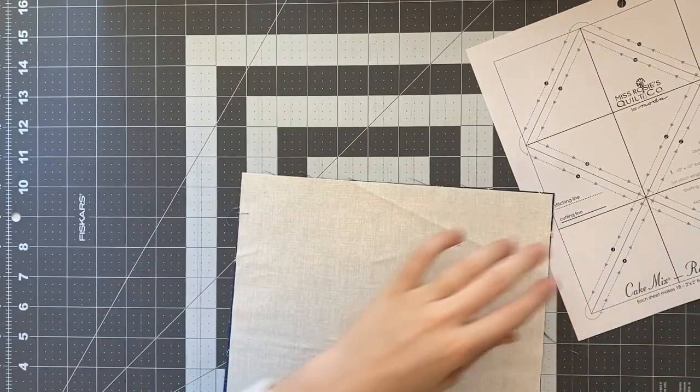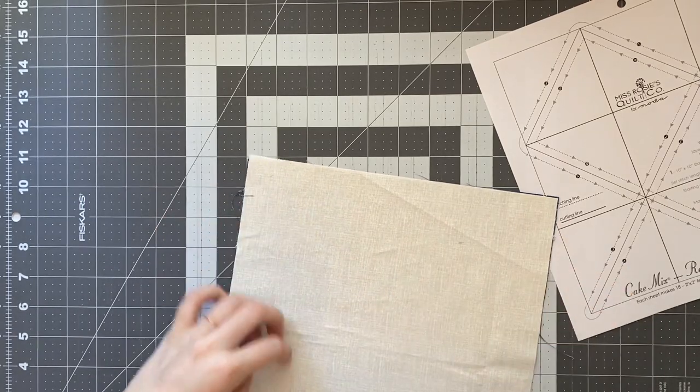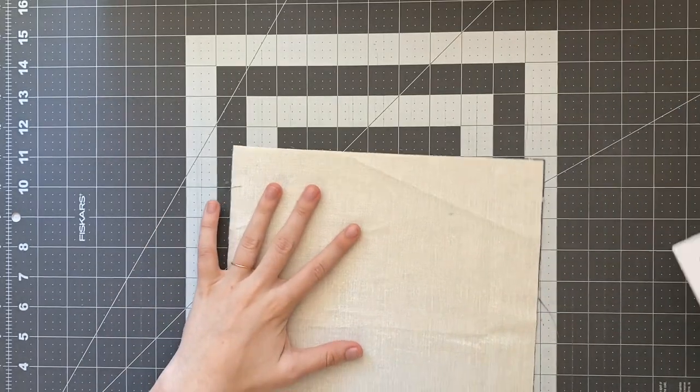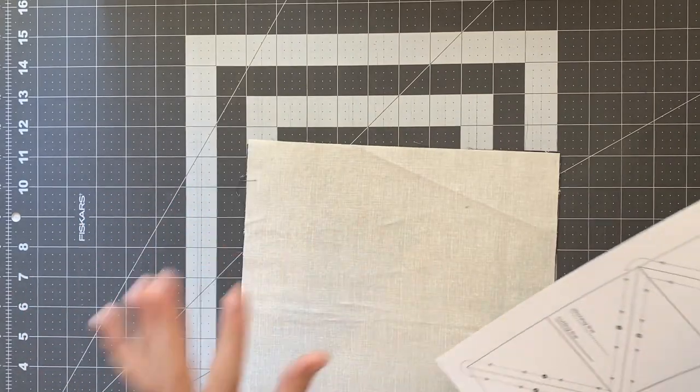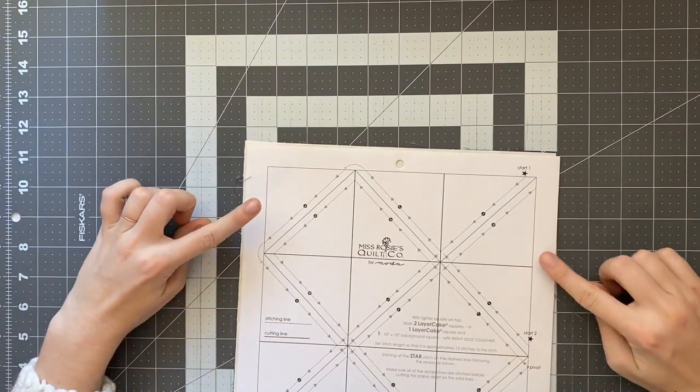And the nice part also if you're cutting your own squares and you're not using pre-cut layer cakes you can see that my squares aren't exactly the same size. I roughly cut them about 10 inches and this is okay because we have a really big margin here.